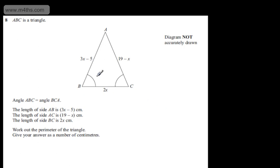This is question number 8. It says ABC is a triangle. Angle ABC is equal to angle BCA. The length of side AB is 3x minus 5 centimeters, the length of side AC is 19 minus x centimeters, and the length of side BC is 2x centimeters.